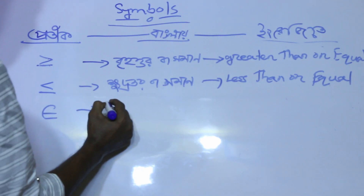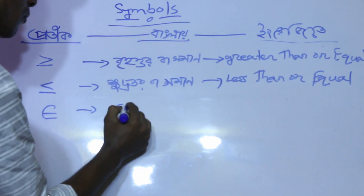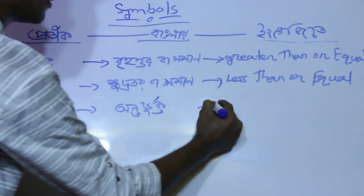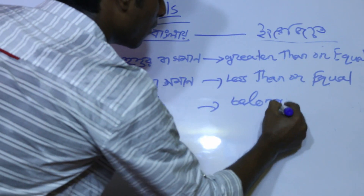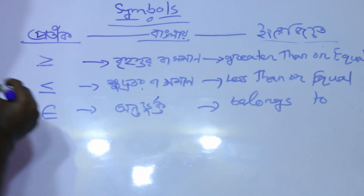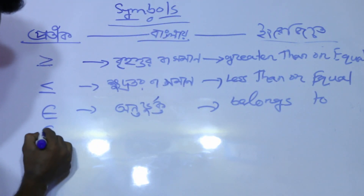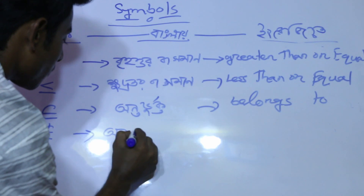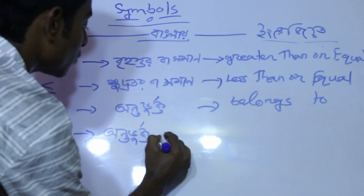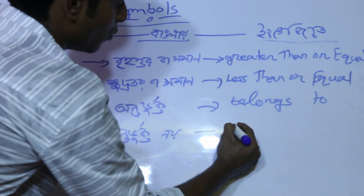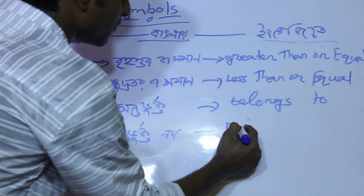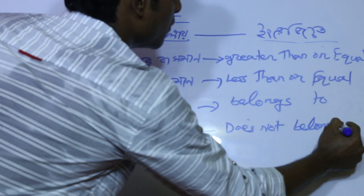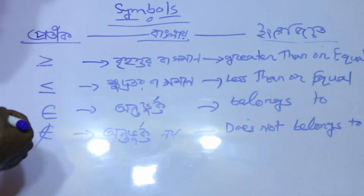20 belongs to another book. Another book belongs to this book. Another book, another book — does not belong to. Does not belong to, does not belong to this book.